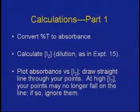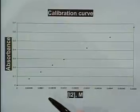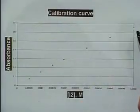Then you want to plot the absorbance versus the iodine concentration. Here we have a typical graph showing absorbance versus the iodine concentration, and our points are marked out on the graph.